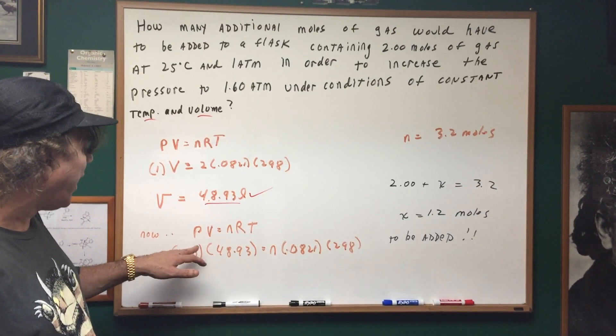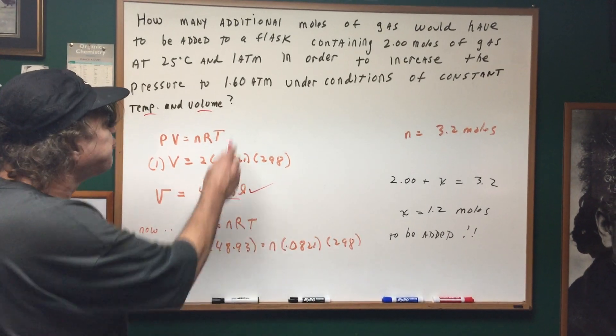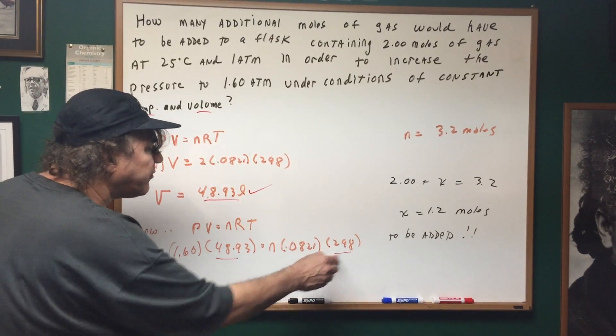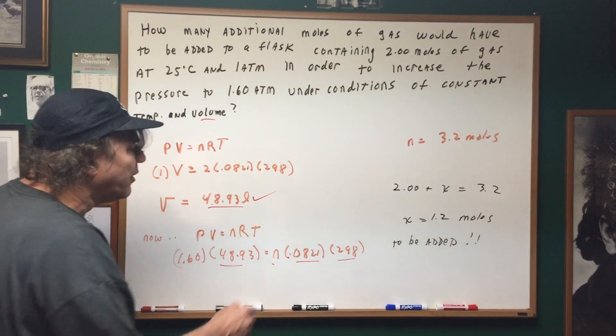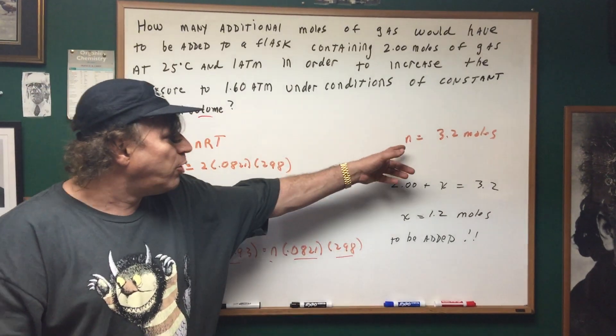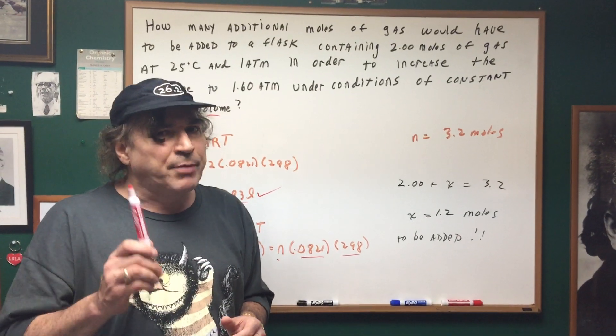This is going to represent my new conditions. Well, the new conditions of pressure we want is 1.60. We know the volume, we know the temperature, and we know the constant. That gives me the total number of moles.